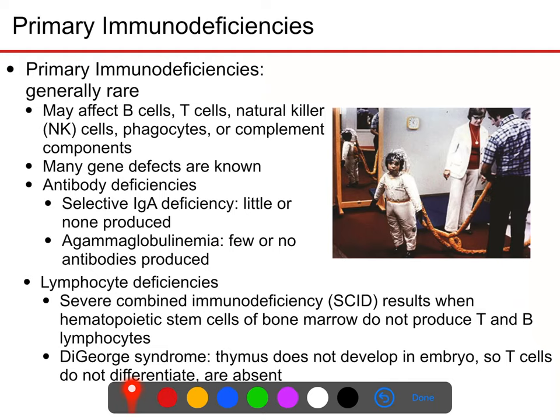Primary immunodeficiency also includes lymphocyte deficiencies such as SCID, where you simply don't produce T and B lymphocytes and basically have no immune system. Some of you may have heard of the 'bubble boy' — SCID is the disease he had. He had to live his entire life in an isolation suit because he had no immune system and would have been killed very quickly by any pathogen he encountered.